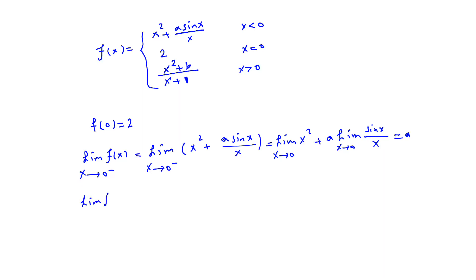The limit of f(x) as x approaches 0 from the right side is the limit of x² plus b over x plus 1 as x approaches 0 from the right side. By direct substitution, this limit is b.